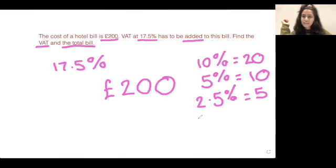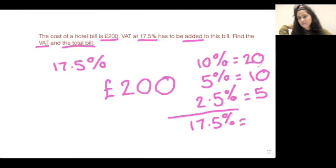Now why have I done this? Let's see. What does 10, 5, and 2.5 add up to? 10 plus 5 is 15, plus 2.5 is 17.5%. So surely these totals here is 17.5%. So we have 20 plus 10 which is 30, plus 5 which is 35. And there we have the VAT worked out: £35.